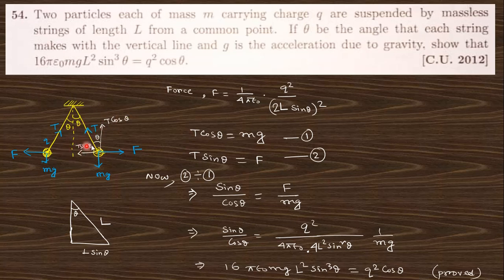From the vector components, we have T cos θ = mg and T sin θ = F. If you divide sin θ by cos θ, you get tan θ = F/mg. Putting the value of F, which is the Coulomb force F = q²/(4πε₀(2L sin θ)²), you will get this relation: 16ε₀mgL²sin³θ = q²cos θ.